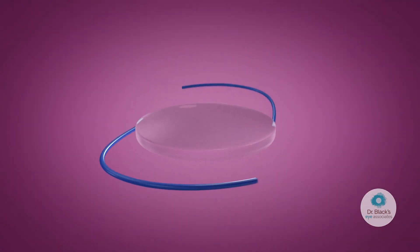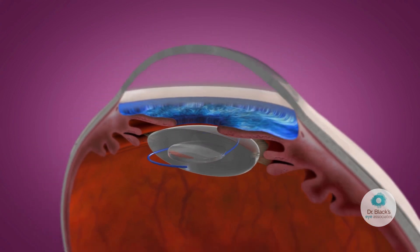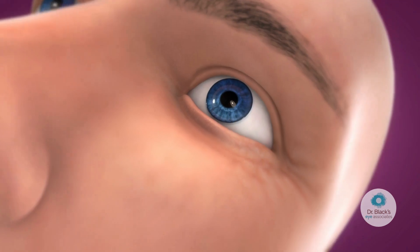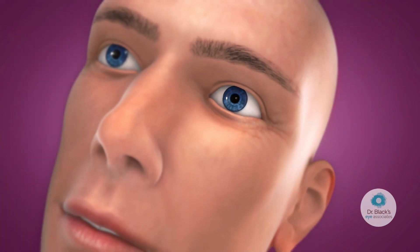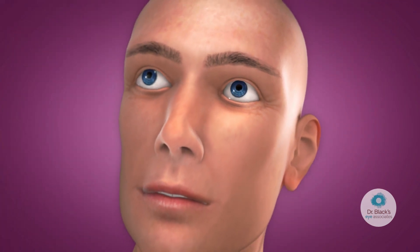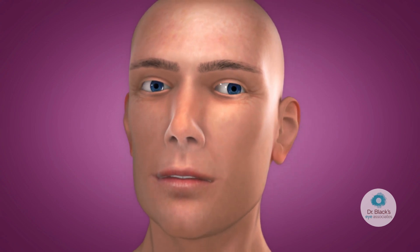RxSight's light-adjustable lens enables cataract surgeons to precisely reshape the lens based on the exact amount of visual correction and optimization needed to achieve the desired vision after cataract surgery.